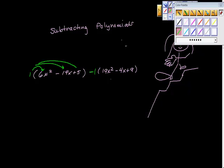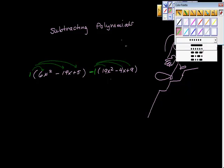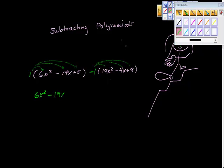Complete distribution here, here, here, and here. What happens here? Absolutely nothing happens here, just so we know how we satisfy these parentheses: 6x² - 19x + 5. But here, what happens? The signs switch, so we get instead of positive 19x², we get negative 19x² + 4x - 9. Is that good math?